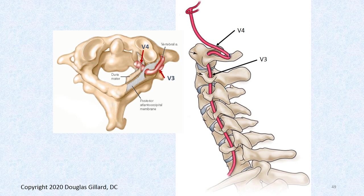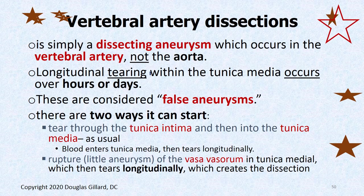Here's another look at that crazy bend — you can see why atherosclerosis loves to build up right there. The author messed this picture up: the vertebral artery travels in the groove for the vertebral artery behind the lateral mass, and it should have been diving in right here beneath the posterior atlantooccipital membrane.